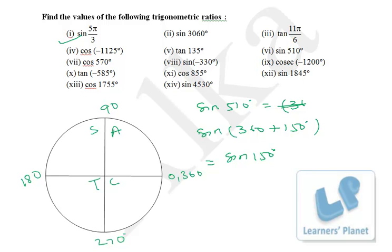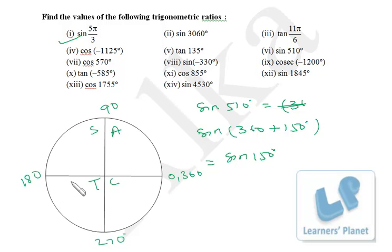The first important rule you've learned: if there is a very large value, keep deducting 360° until you get a value less than 360°. For example, 1755°: just deduct as many 360°s as you can, because 360° means one complete circle — after completing one circle, the situation repeats. So sine 510° is sine 150°.